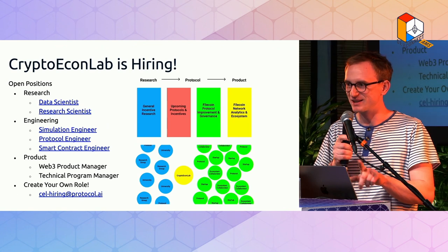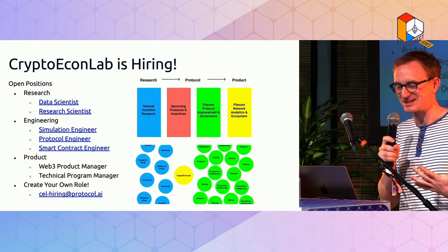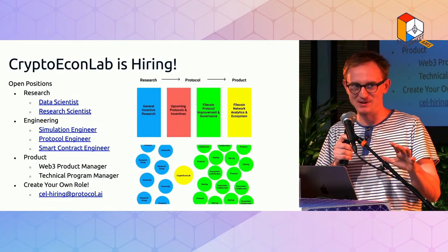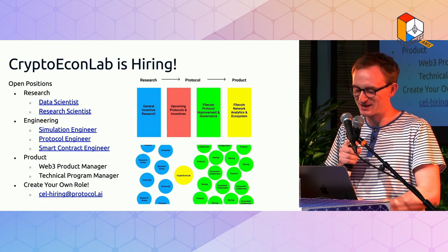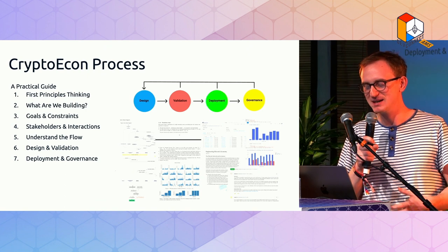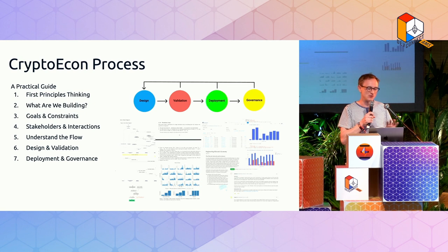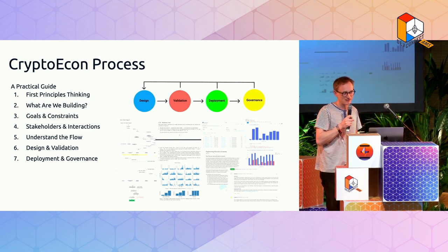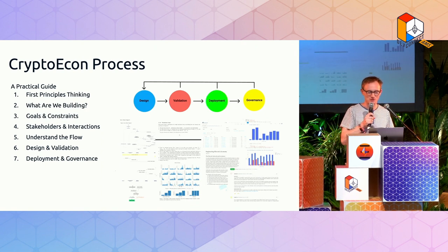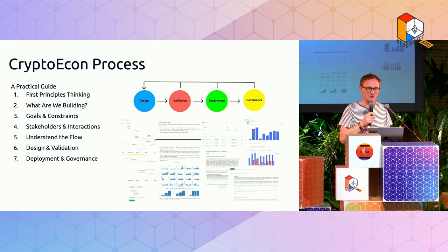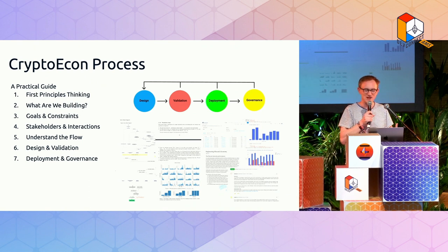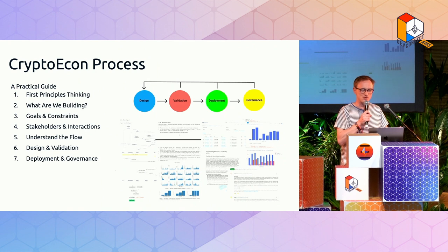A slight advertisement: Crypto Econ Lab is hiring — data scientist, research scientist, engineering, product — so come work with us. In Crypto Econ Lab we have an iterative process of design, validation, deployment, and governance. We take a first-principles approach: we're not just drawing lines through points saying 'is it going up?' We think about underlying mechanisms — differential equations describing competitive equilibria, semi-mechanistic models encoding parts of the protocol, or fully agent-based models.